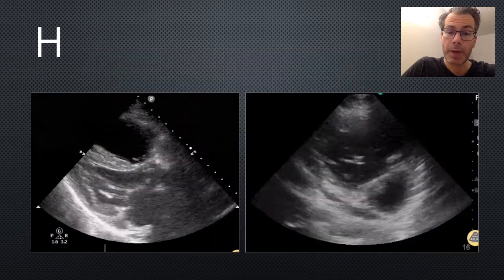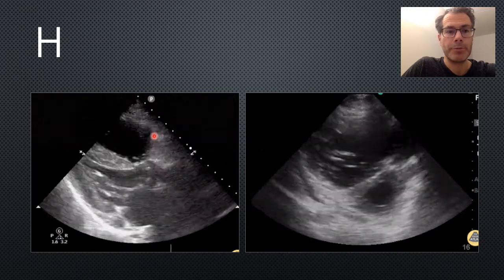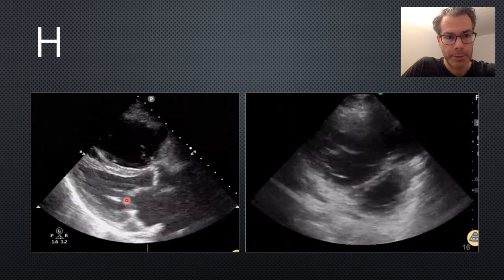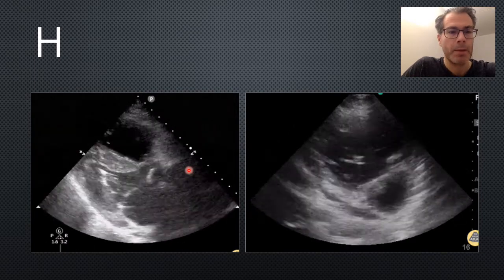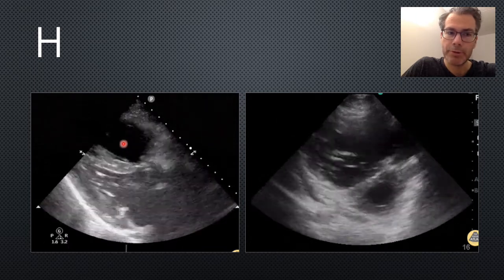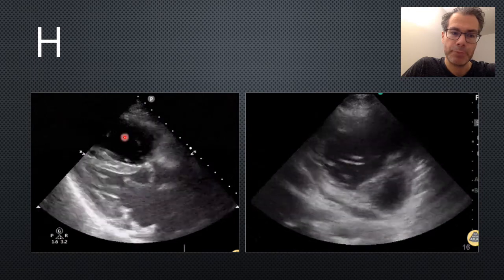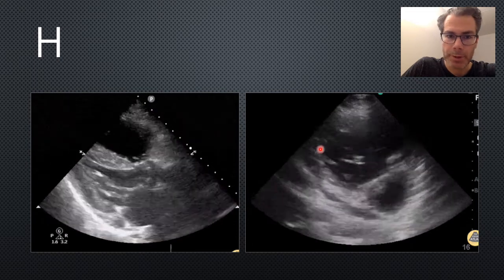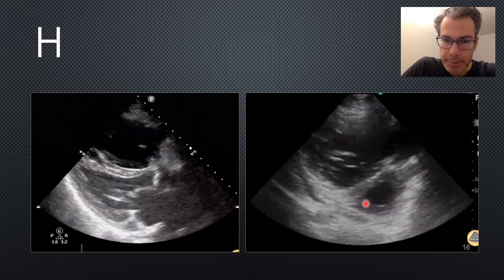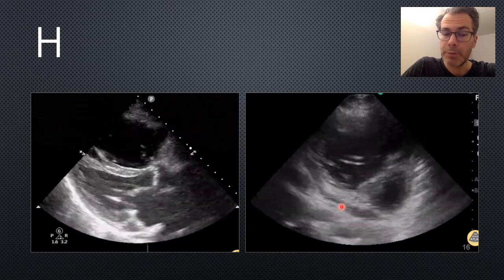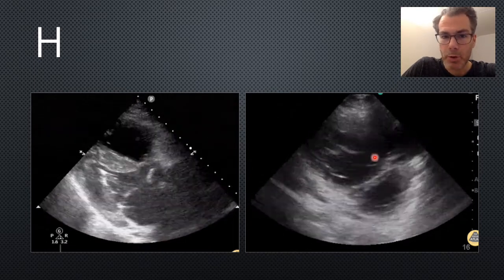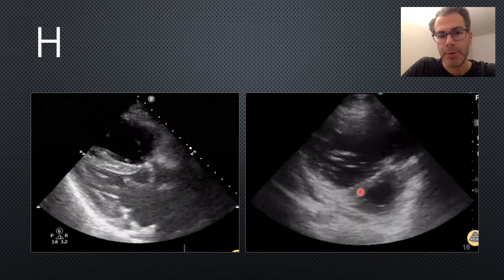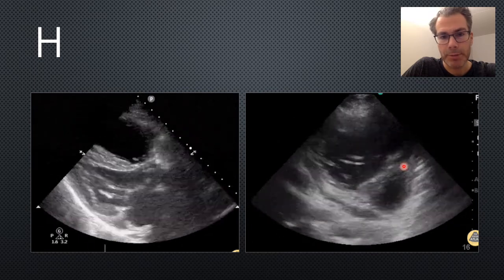The second thing we look for in the heart is RV strain. On a parasternal long axis view, you can see the RV is massively dilated, really crushing the LV below it. On parasternal short axis, the RV is enormous and the LV is tiny. We also see septal flattening — normally the septum should be convex and the LV round like a donut, but here the septum is flattened and the LV takes on a capital D appearance, known as the D sign. For more on POCUS and PE, check out my other video.